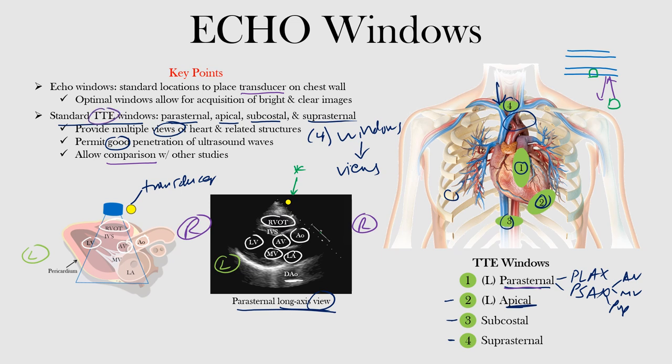To recap: echo windows are standard locations we place the transducer on the chest wall that allow acquisition of bright and clear images. TTE stands for transthoracic echocardiogram — an echo performed on the patient's chest. The four standard echo windows are parasternal, apical, subcostal, and suprasternal. They provide great views of the heart, valves, endocardium, and can reveal findings such as a thrombus. They allow for great ultrasound penetration and standardized comparison across studies.